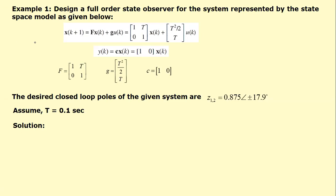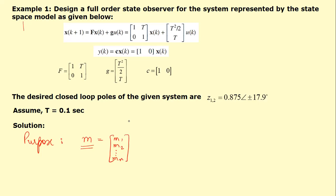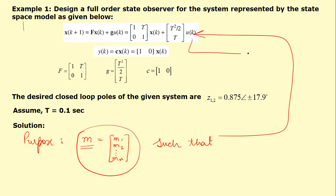Our purpose is to determine the matrix M, which is a column matrix having some elements. Our purpose is to find out this M such that the given system has its closed loop poles placed on the desired locations. The desired closed loop poles are placed on these locations for this particular given system, for the value of M.